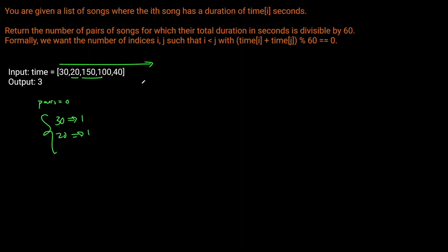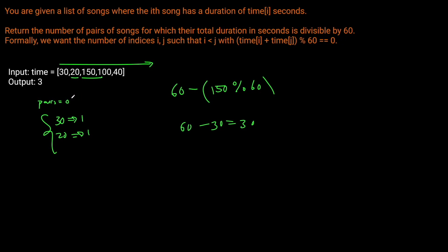Now processing 150: it's not immediately divisible by 60. We look for 60 minus (150 modulo 60). 150 modulo 60 is 30, so we need 60 minus 30, which is 30. We have a 30 in the dictionary! So we increment pairs by one — pairs is now 1. Then we add 30 to our dictionary count, so now we have two entries with remainder 30.